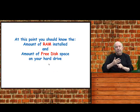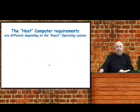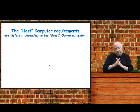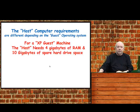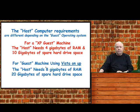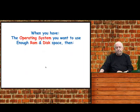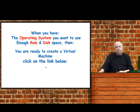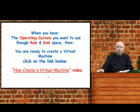At this point you should know the amount of RAM and the amount of free space you have on your hard drive. The host computer requirements change depending on what guest operating system you want to use. If you want to run XP on your guest machine, your host needs at least four gigabytes of RAM and an extra 10 gigabytes of spare hard drive space. If you're going to use Vista, Windows 7, or Windows 8, the host system needs eight gigabytes of RAM and a spare 20 gigabytes of hard drive space. When you have your operating system, enough RAM, and enough disk space, you're ready to create a virtual machine — just click the link below and I have a video that will walk you through step by step.